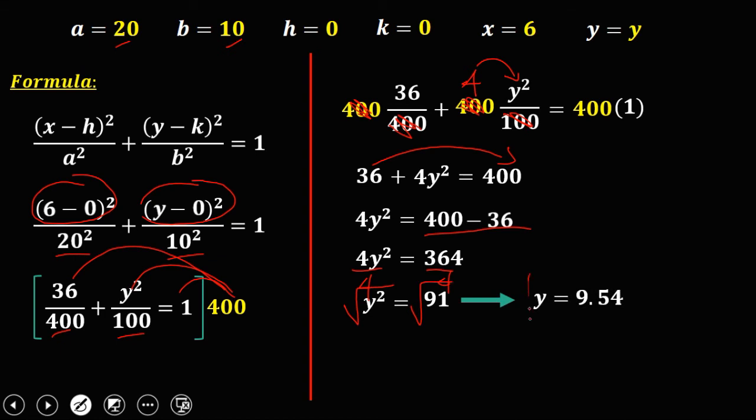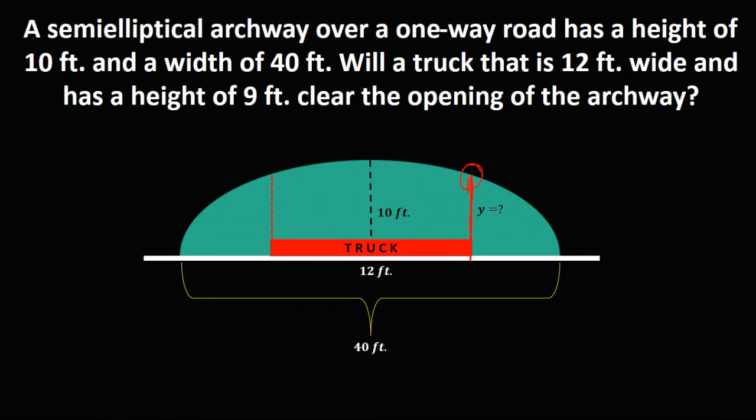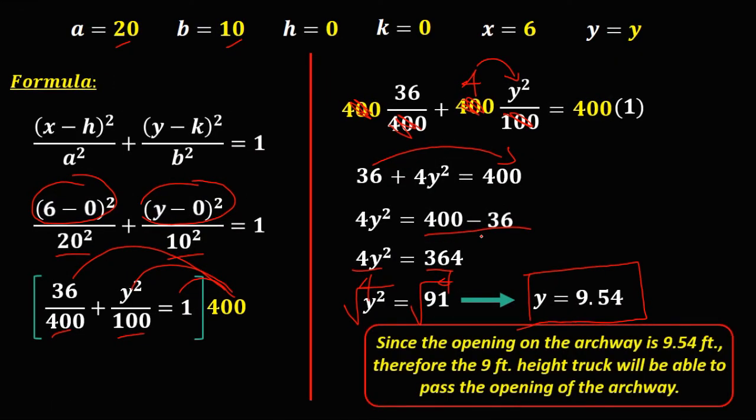So the height of this area is 9.54 feet. So therefore, since the height of this area is 9.54 feet and the height of the truck is 9 feet only, therefore the 9 feet height truck will be able to pass the opening of the archway.